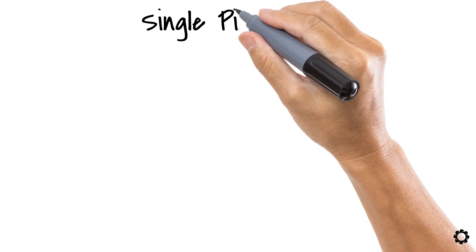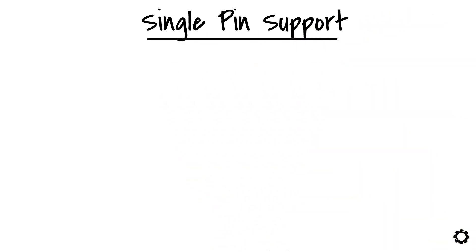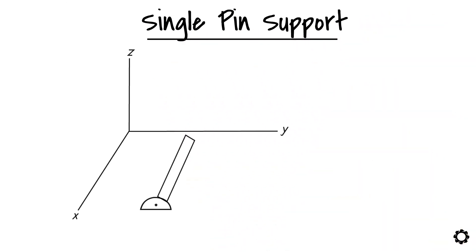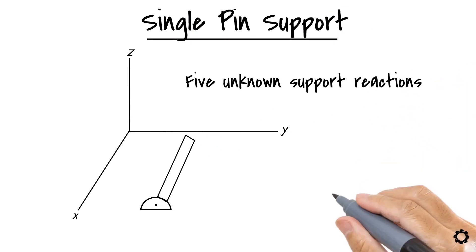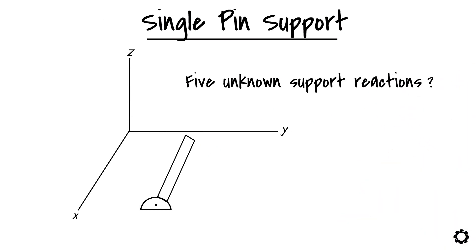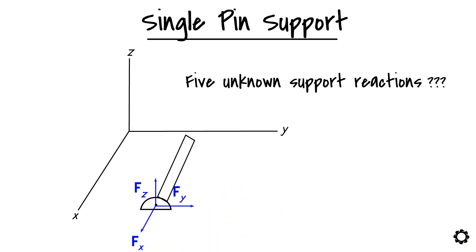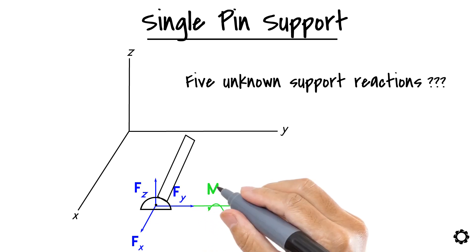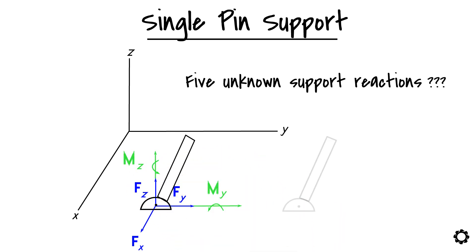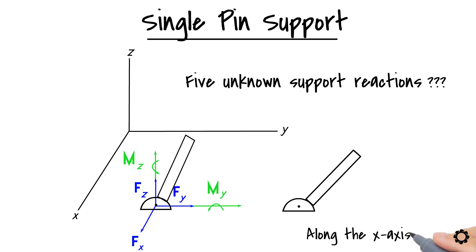Let's talk now about the single pin support and its support reactions. The single smooth pin has five unknown support reactions. Three of them are unknown reaction forces which prevent translational displacement in all directions, and two are couple-moment components usually acting on the y and z axis. Therefore, this kind of support does not usually prevent rotational displacement from happening along the x axis.